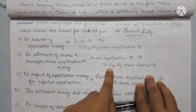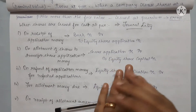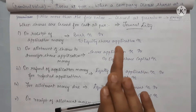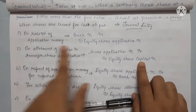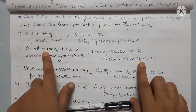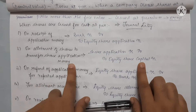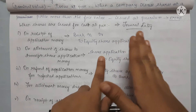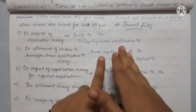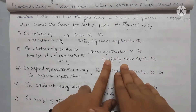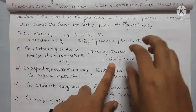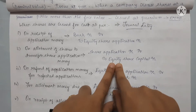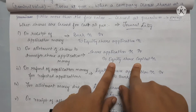Next, we fix the number of applications to allot. The limit is 1,000, so we get the 1,000 application amount and proceed to allotment. We transfer the application money to share capital.